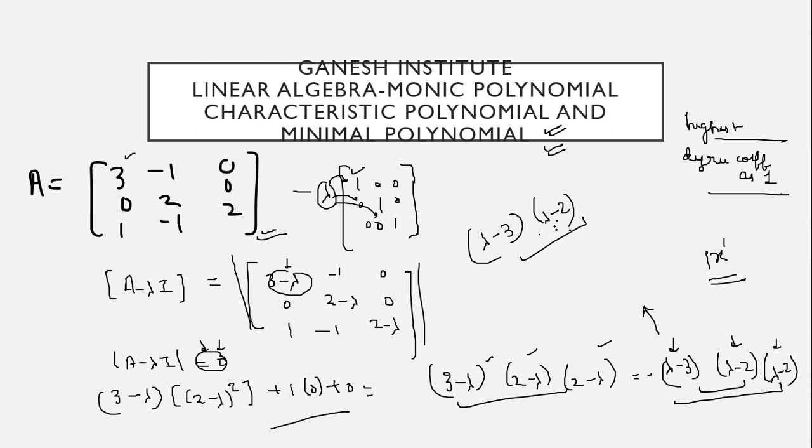Getting my point? So lambda minus 3 lambda minus 2 is one case, or lambda minus 3 lambda minus 2 whole square is one case. Now if you take lambda minus 3 lambda minus 2, this one, and if you multiply it what you will get? Lambda square minus 5 lambda plus 3 to the 6, right?